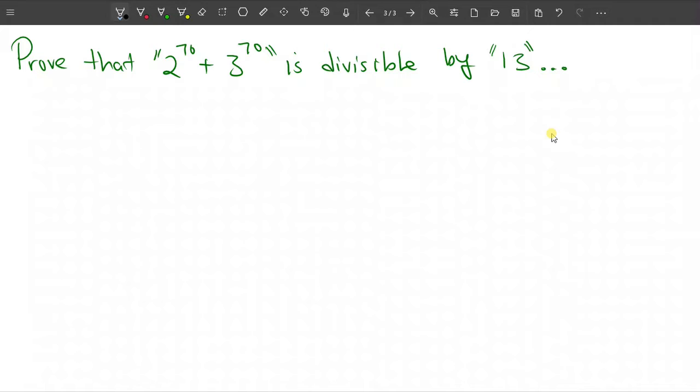So in this problem, we are given a very huge number, 2^70 + 3^70, and we are asked to verify that this number is divisible by 13 as seen on your screen there.